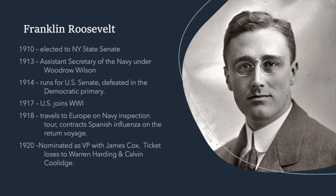The following year he entered Columbia University Law School and became a lawyer. In 1905 he married another fifth cousin, Eleanor Roosevelt. In 1910 Franklin Roosevelt was elected to his first public office, that in the New York State Senate. In 1913 he was appointed by President Woodrow Wilson to be the Assistant Secretary of the Navy. In 1914 Franklin Roosevelt ran for United States Senate but was defeated in the Democratic primary in New York.